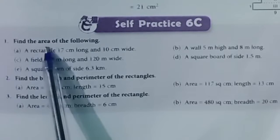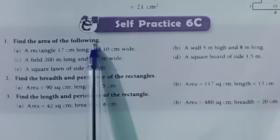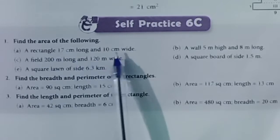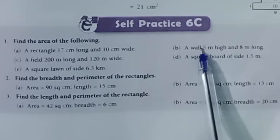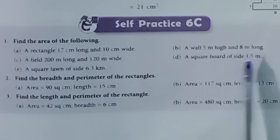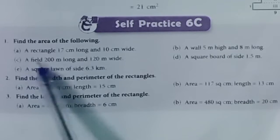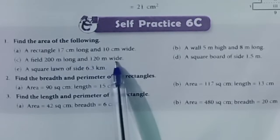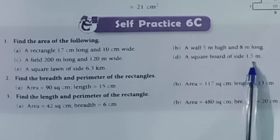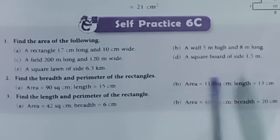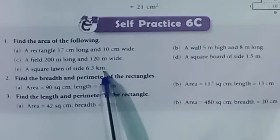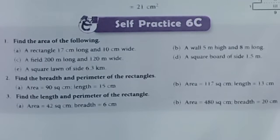Question 1. Find the area of the following: a rectangle 17 cm long and 10 cm wide; a wall 5 m high and 8 m long; a field 200 m long and 120 m wide; a square board of side 1.5 m; a square lawn of side 6.3 km.